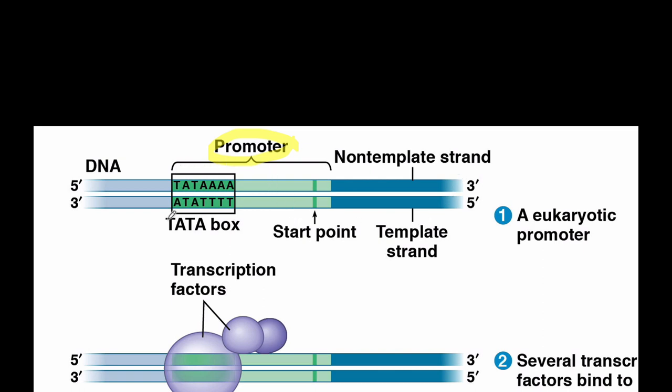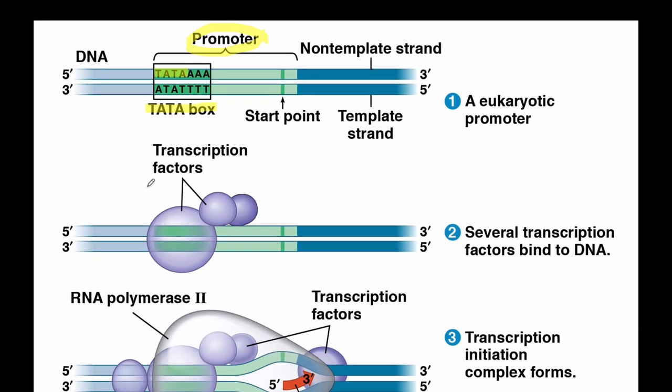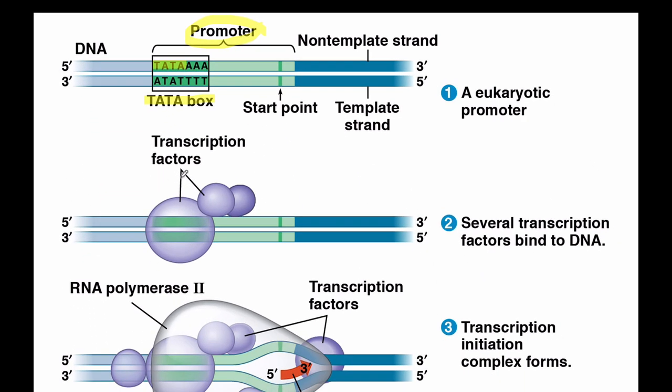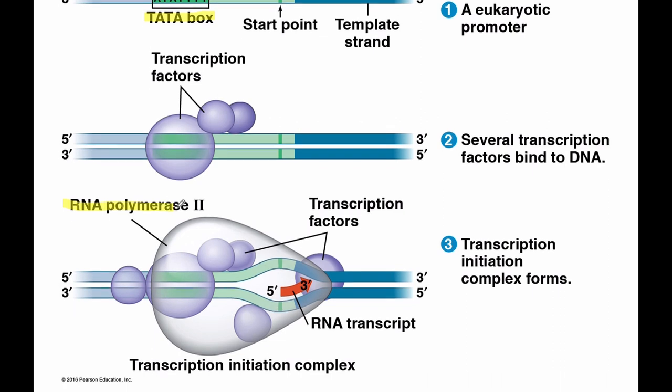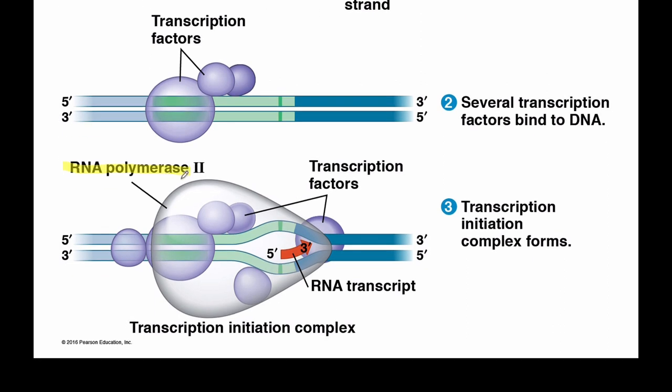The start line here, scientists call it the TATA box. TATA box is a repeating sequence of TATAs. The TATA box serves as a welcome mat for these proteins called transcription factors. The transcription factors link onto the TATA box, and they serve as the welcome mat for this big enzyme called RNA polymerase. Now it ends in an ACE, so we know it's an enzyme.